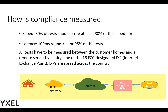Tests have to be measured between customer homes and a remote server — specifically, connecting to an FCC-designated IXP. Last year there were 16 designated IXPs, but now there are well over 60. The tests have to go from the subscriber all the way to an FCC-designated IXP, and they want to make sure you're not putting the test server right next to the house.